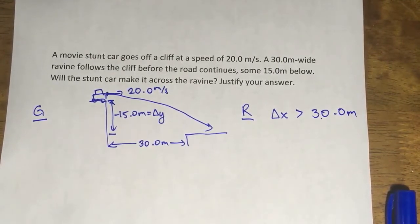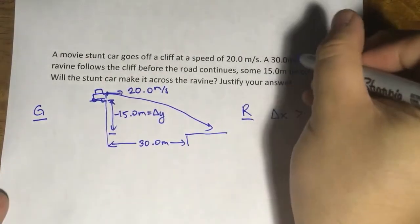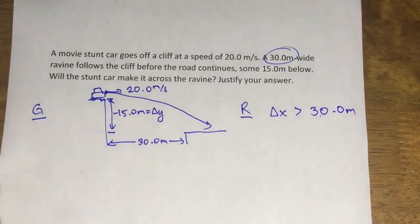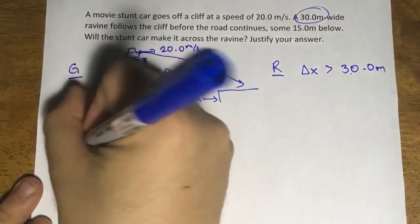Your delta x must exceed 30 meters in order to make it across. So you're solving for delta x. Take note. You aren't given delta x. You're trying to solve for delta x and then comparing it with 30 meters. So given this, let's put our equation in.